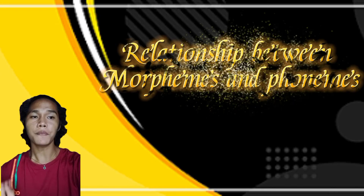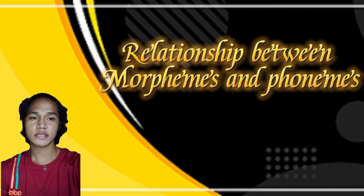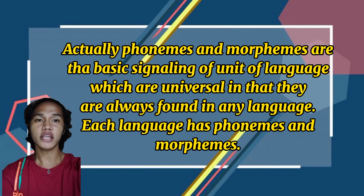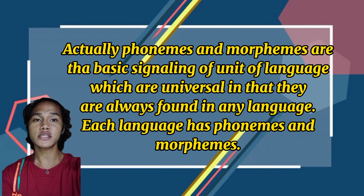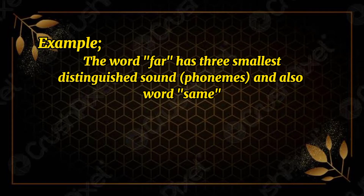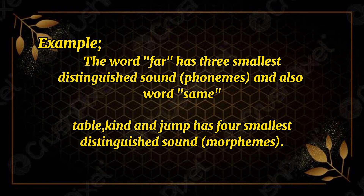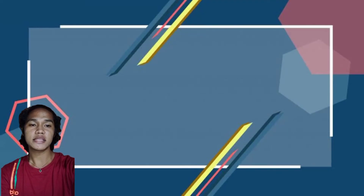What is the relationship of morphemes and phonemes? Phonemes and morphemes are the two basic signaling units of language, which are universal — they are always found in any language. Each language has phonemes and morphemes. For example, the word 'far' has three smallest distinguished sounds, which are phonemes. Similarly, the words table, kind, and jump each have four smallest distinguished sounds.